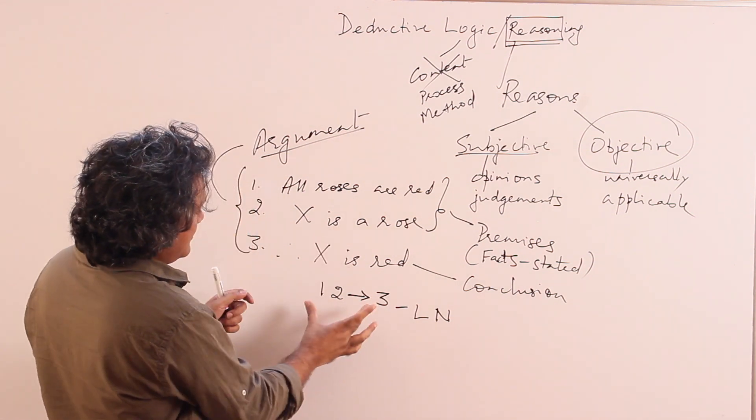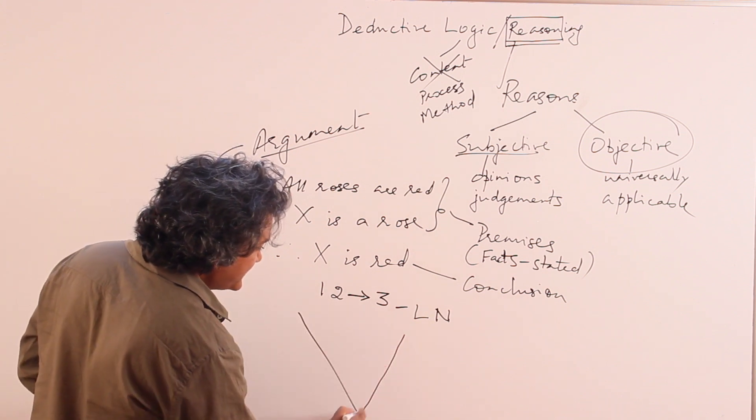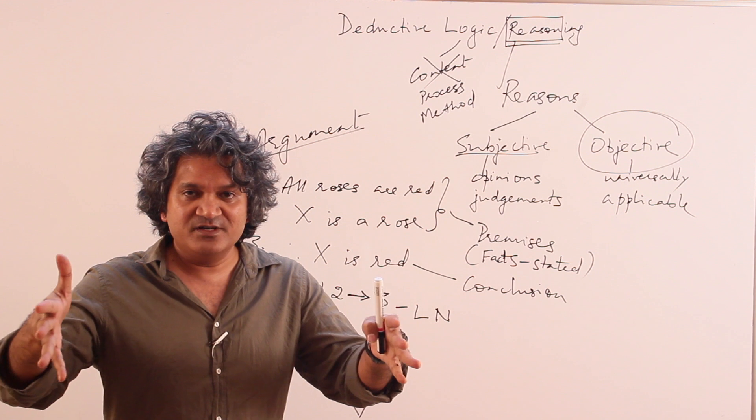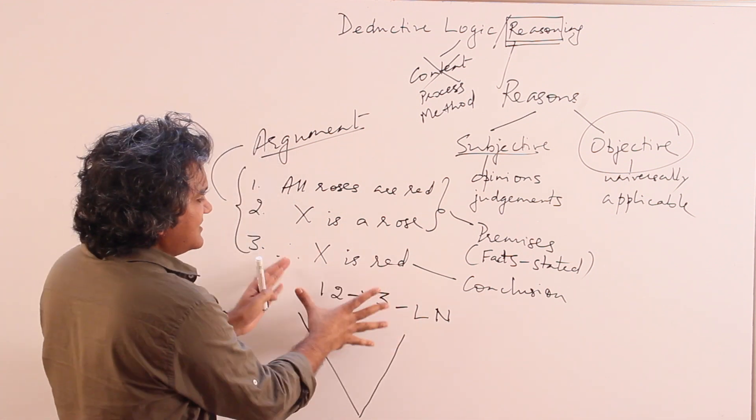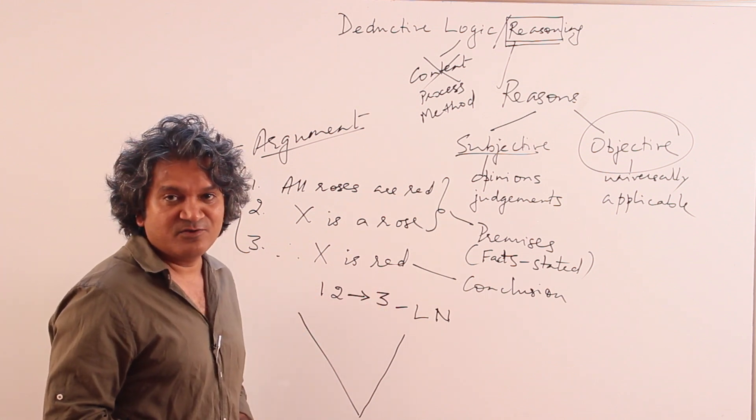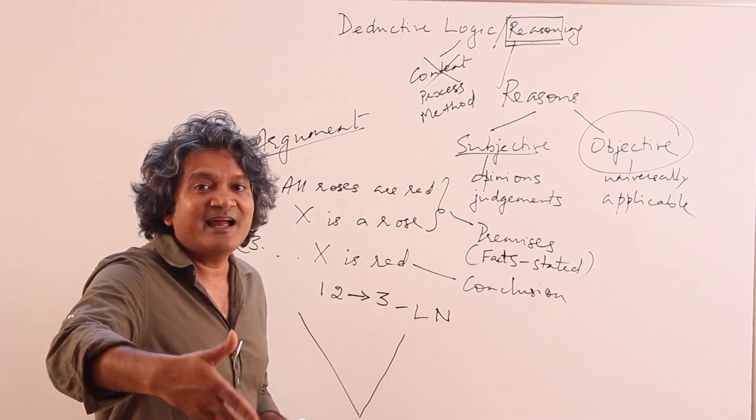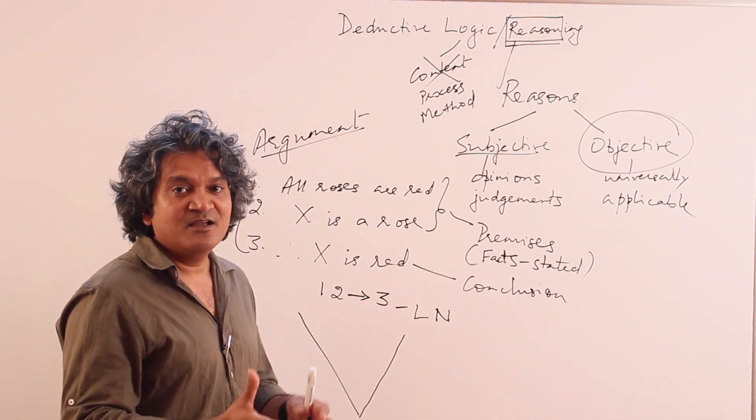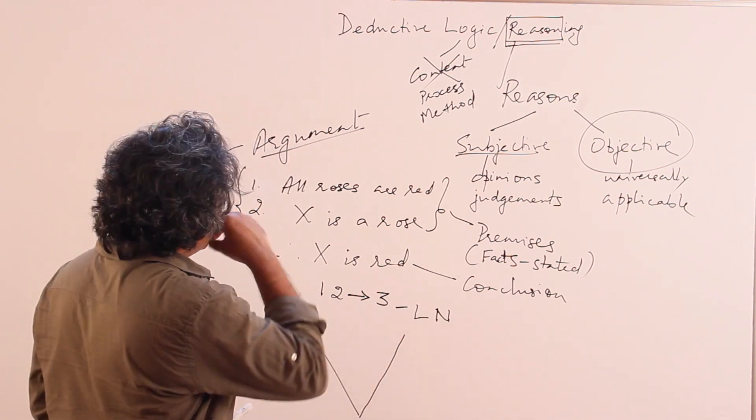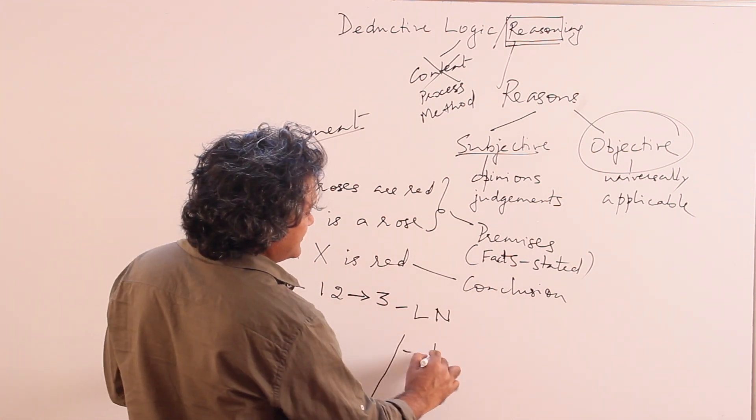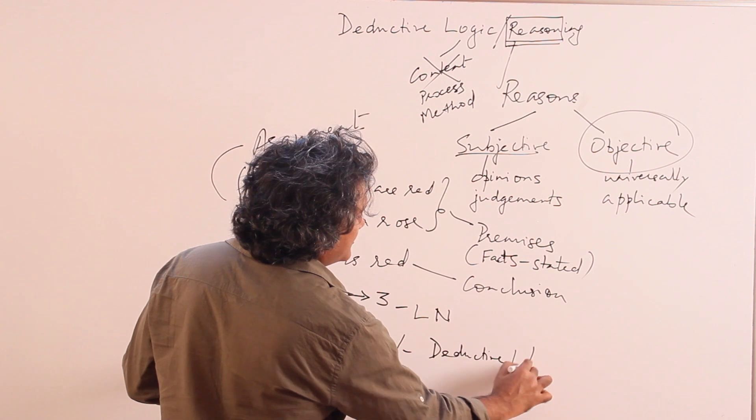And if I want to visually represent it, this is the way it looks like. From general statements we are reaching a specific conclusion. This is known as deductive reasoning or deductive logic. Why? Because we are deducing this. Deduce means when you reach a guaranteed sort of a conclusion. When from data you reach a proper necessary conclusion. So we are deducing this and this is known as deductive logic or deductive reasoning.